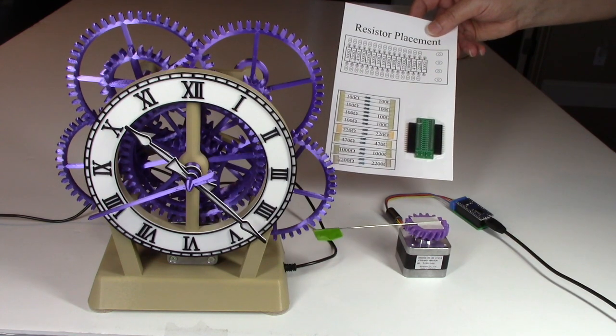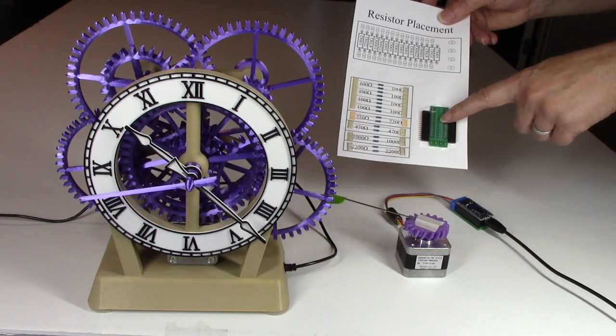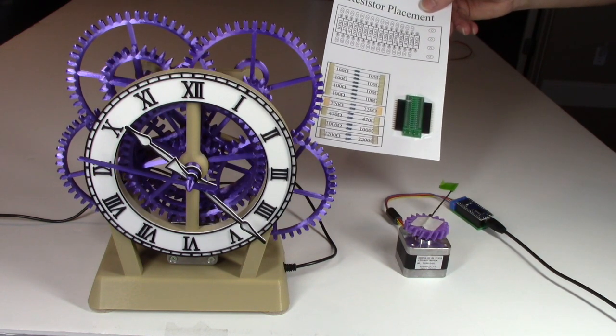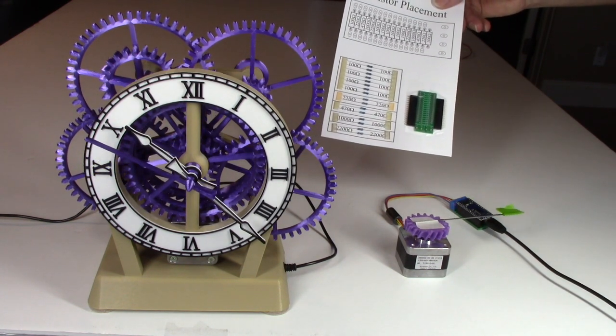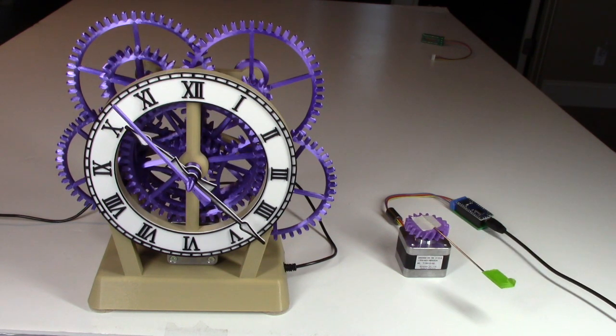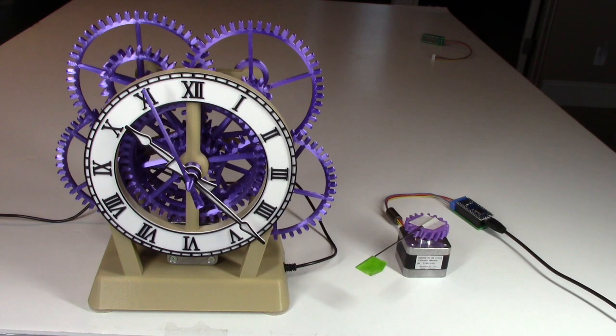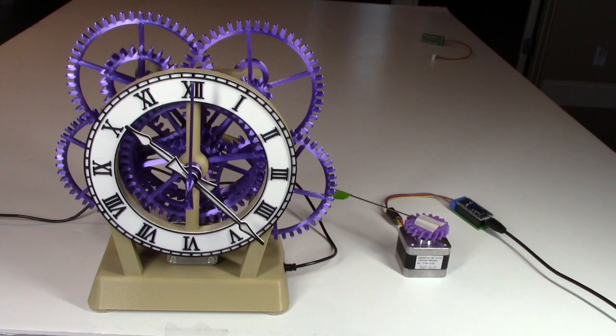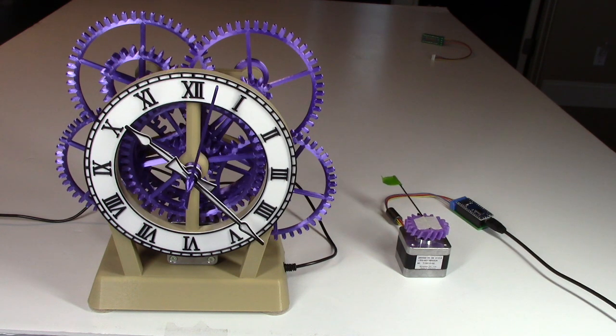This clock design will be available on my mini factory and the motor control circuits will be available on Etsy. It's a fairly simple clock to build. I think the print time is just slightly over 40 hours, maybe half a kilogram of filament.